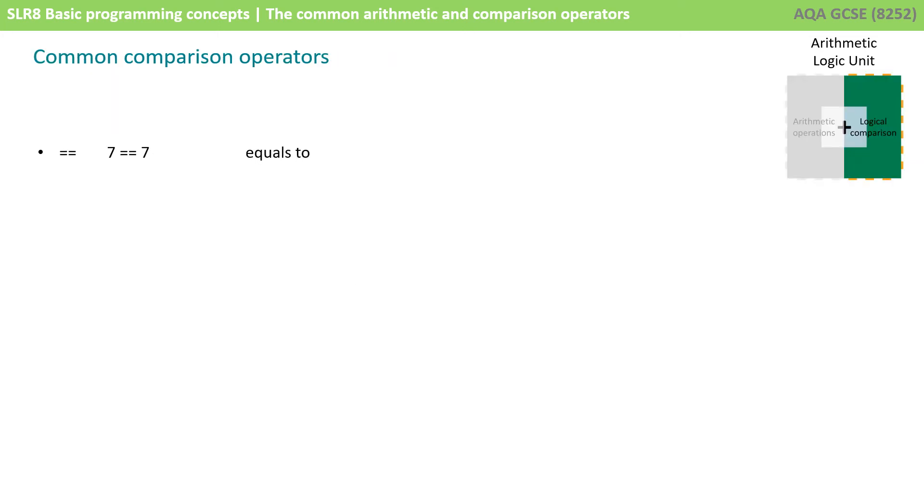There are also common comparison operators. We have equals. Is one number equal to another number? Is this value equal to this value? You'll notice in your exams and in most programming languages, the equals operator is a double equals. That's because the single equals is typically used for assignment.